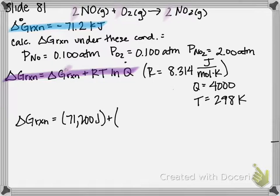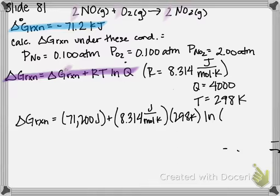Plus our gas constant, 8.314 joules over moles times Kelvin, times our temperature, 298K, and then ln of Q, which is 4,000, calculated on the previous slide. So if we do 8.314 times 298K, multiply that by the natural log of 4,000, you're going to get 20,500 joules.